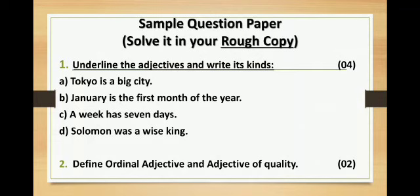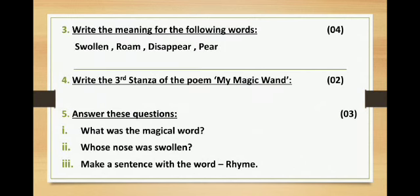Question 2 (two marks, one mark each): Define ordinal adjective and adjective of quality — write the definition of each. Question 3 (four marks): Write the meaning for the following words — Swollen, Roam, Disappear, and Pear. Question 4 (two marks): Write the third stanza of the poem My Magic Wand. Question 5 (three marks, one mark each): Answer these questions — What was the magical word? Whose nose was swollen? Make a sentence with the word rhyme.